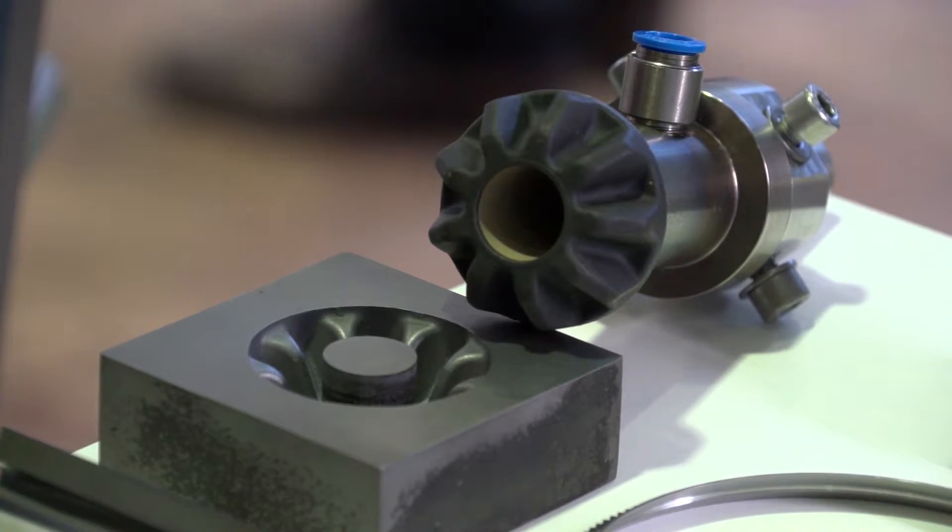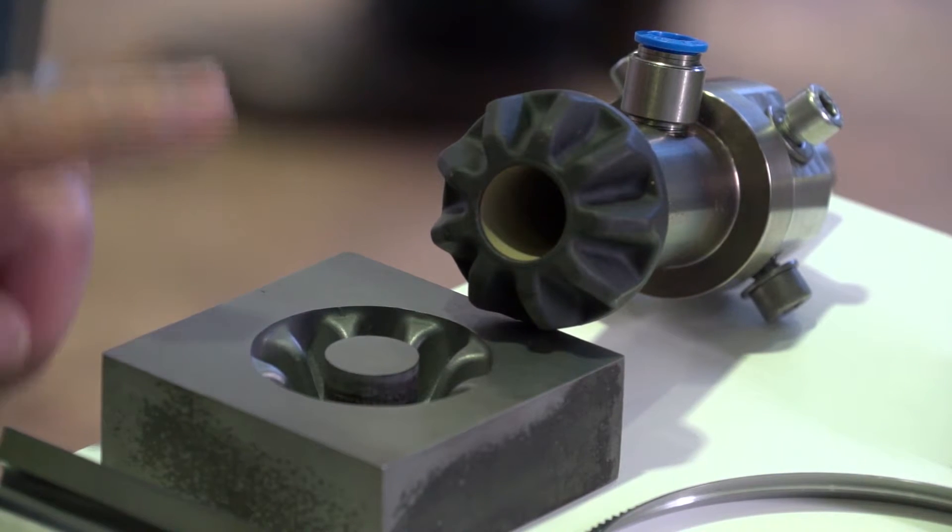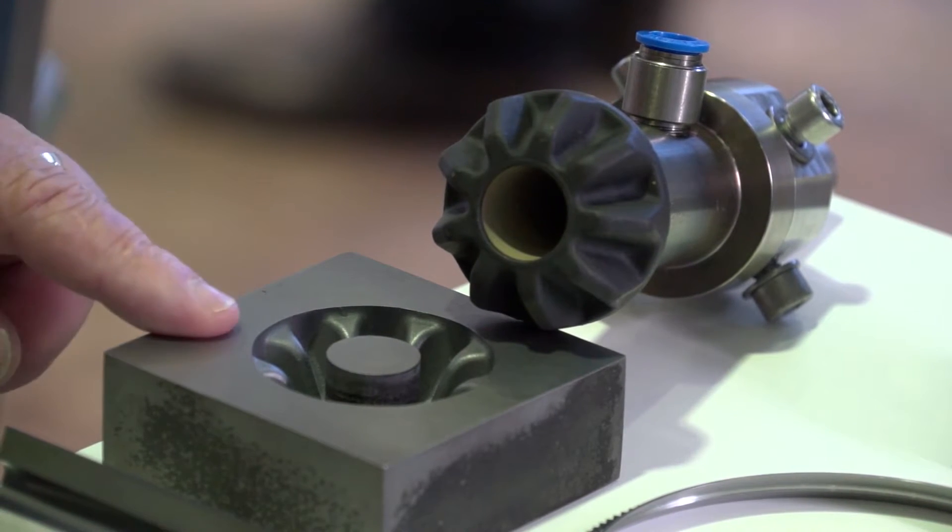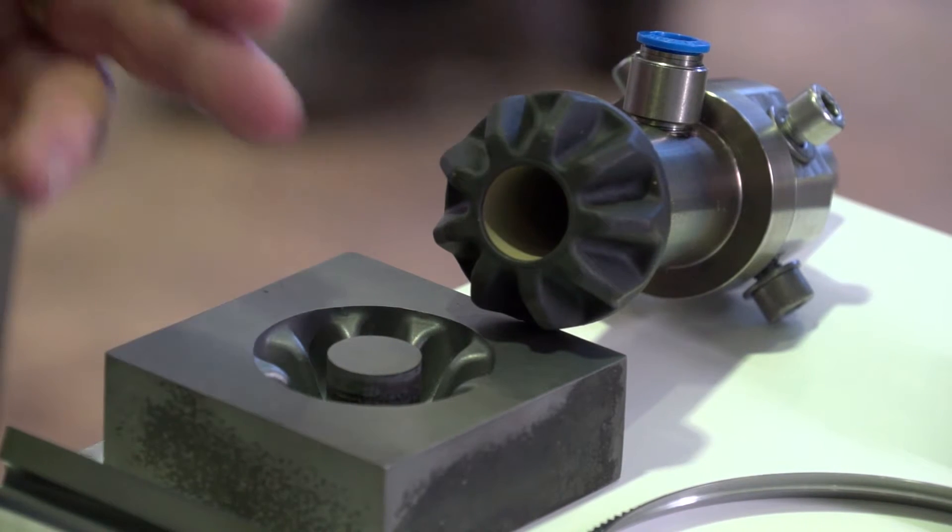The benefit in comparison to hard milling and EDM is in this case, if you produce it by ECM, we have no white layer and we have also no micro cracks. That's one of the major points because these two issues are influencing the output of the forging process.